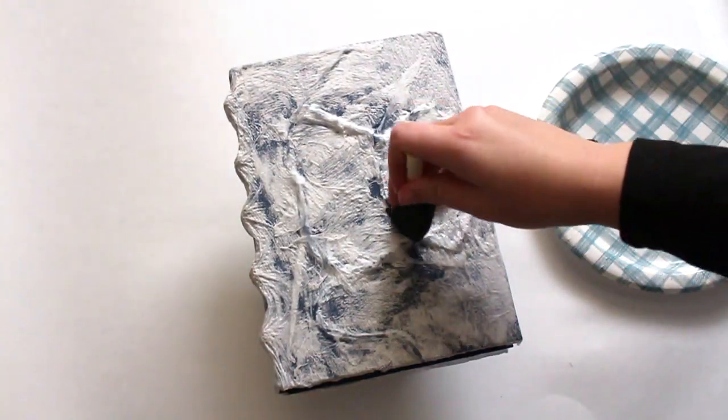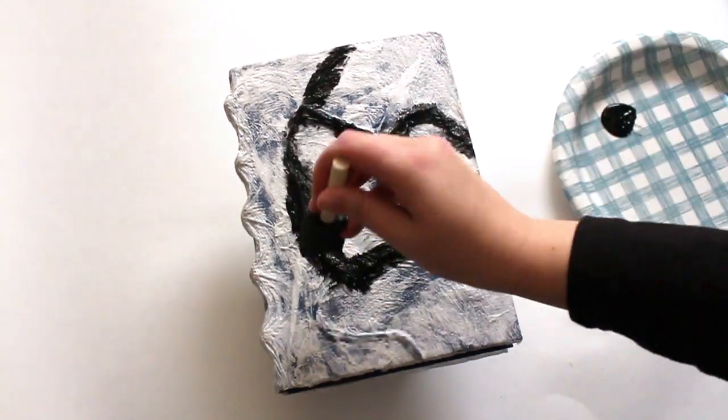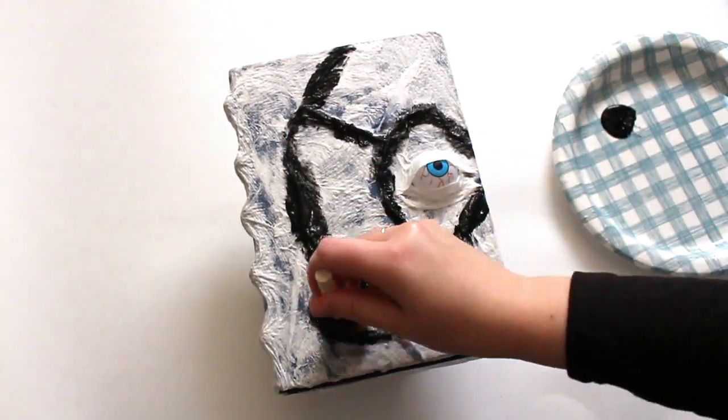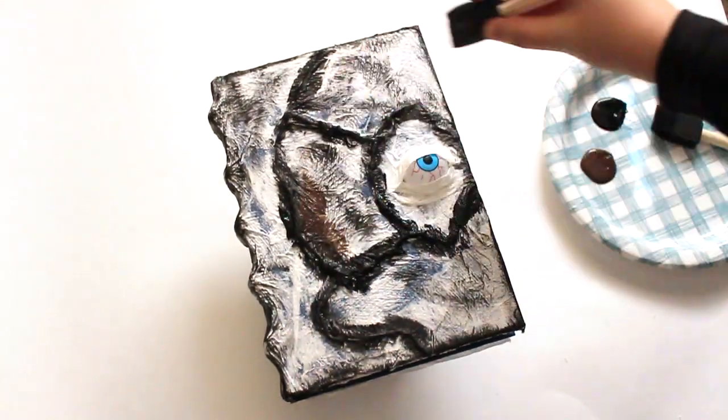Once the glue is dry, add black paint to all raised surfaces. This will later give a shadowing effect. While the black paint is still somewhat wet, add a dark brown paint.